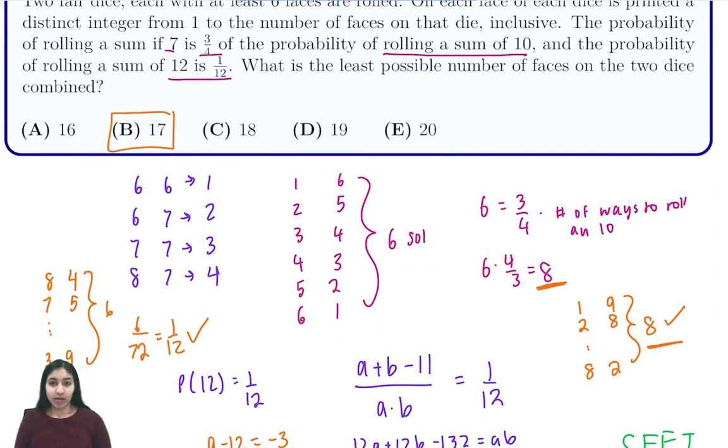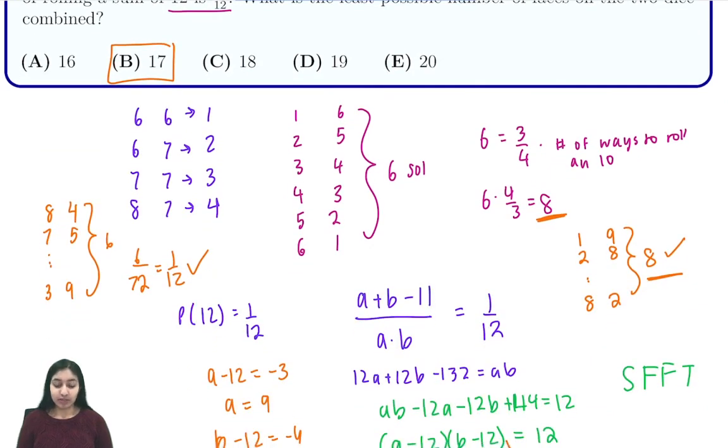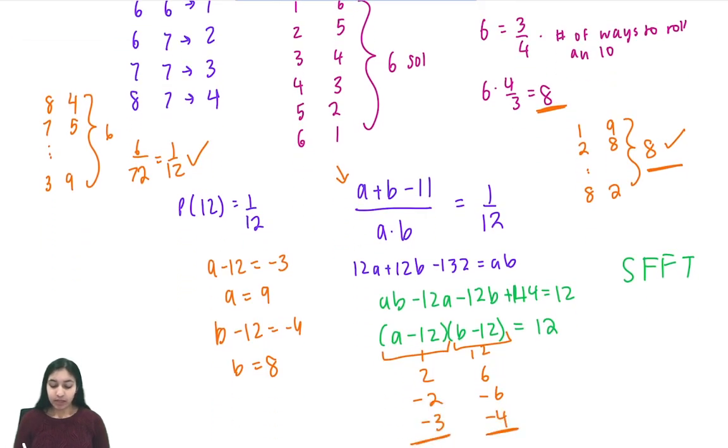So just to quickly summarize, we made the key observation that the number of ways to roll a seven is fixed, so there must be exactly eight ways to roll a 10. Then we found a pattern: when the number of faces on each die is less than 10, we have a formula for the number of ways to roll a 12 which is a plus b minus 11. We divided it by our probability and used Simon's Favorite Factoring Trick to find our solution of negative three, negative four for a minus 12, b minus 12, and then we plugged them in to find our faces of nine and eight.